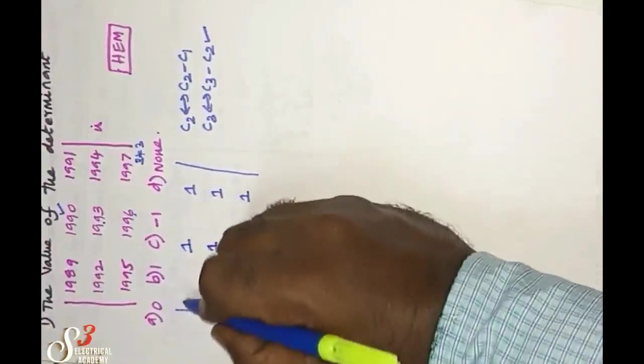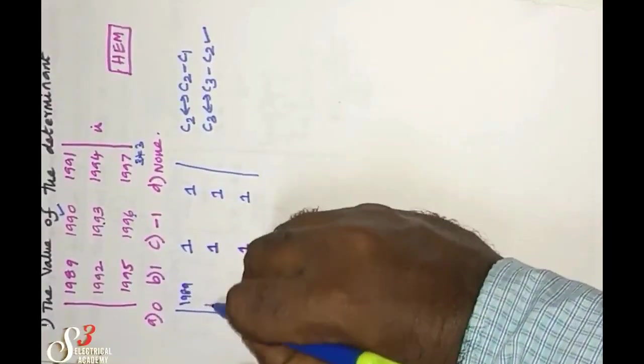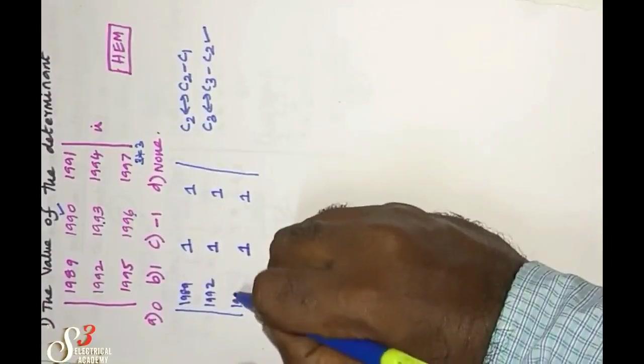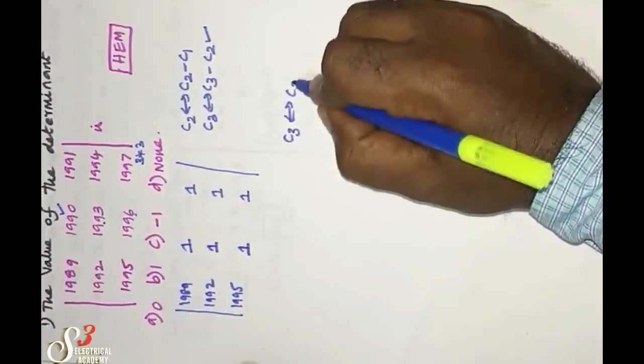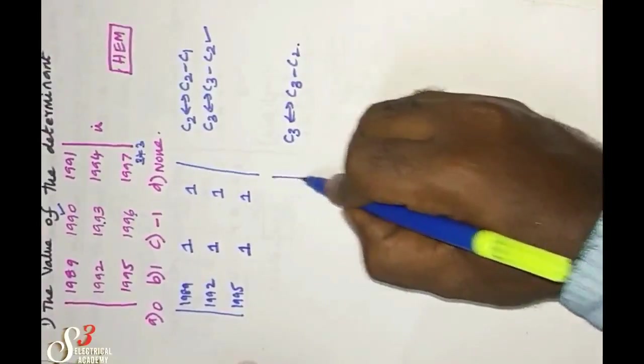Next, C3 will equal C3 minus C2 once again.